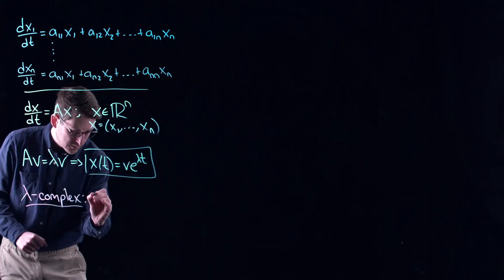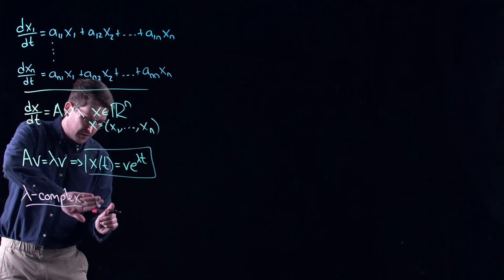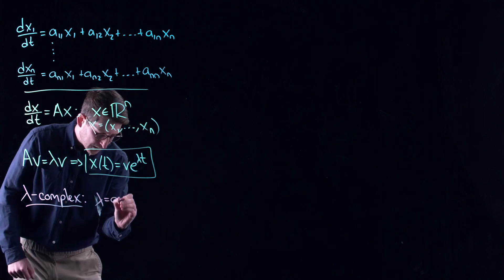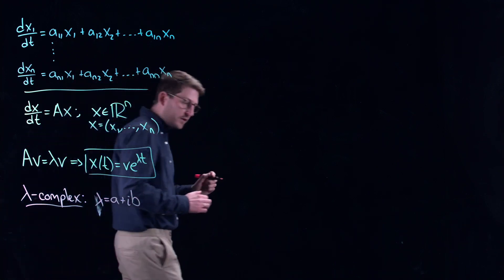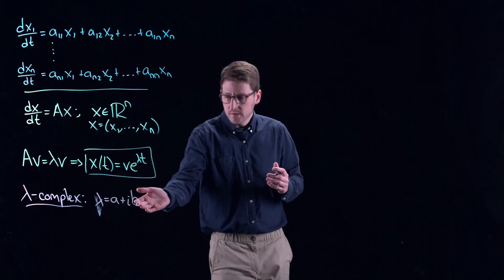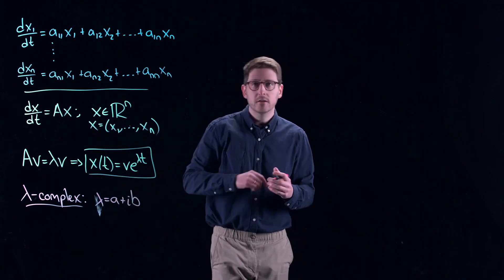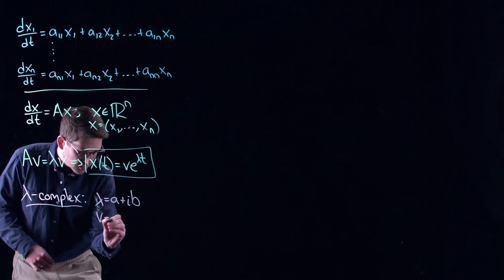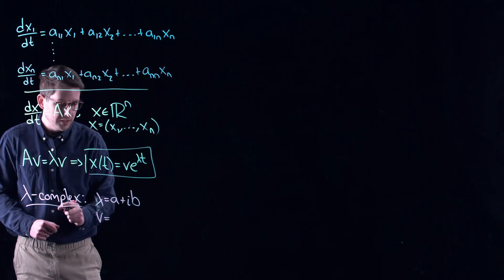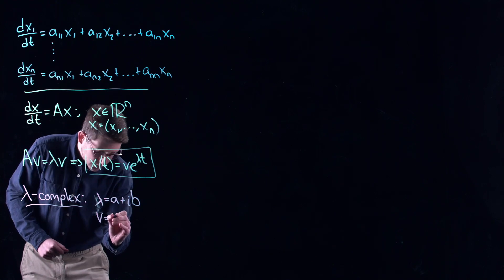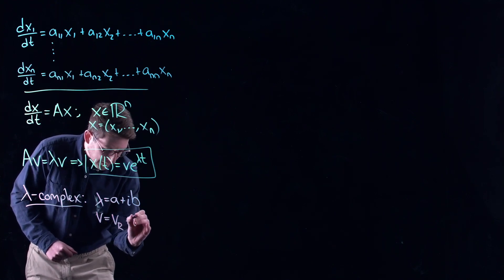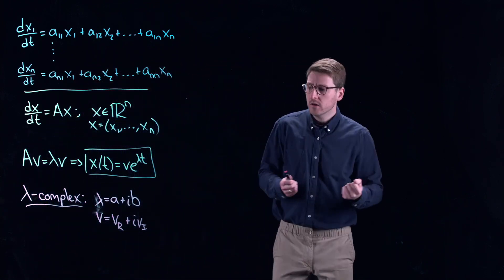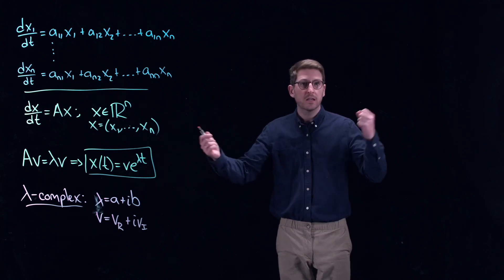So this means that you would write lambda as a + ib. We know that any complex number can be decomposed into its real part, a, and its imaginary part, b. i here is the square root of minus one. But you can do the same thing with the eigenvector. If the eigenvalue is complex, then so will be the eigenvector. So let's call this vr for real plus i times vi. All you're doing is separating out each component of your eigenvector into the real parts and the imaginary parts.